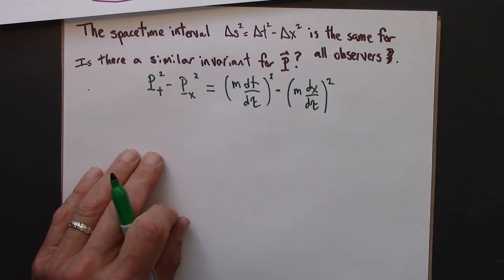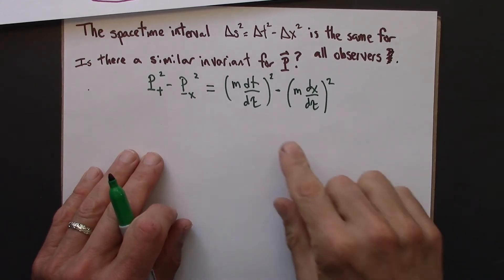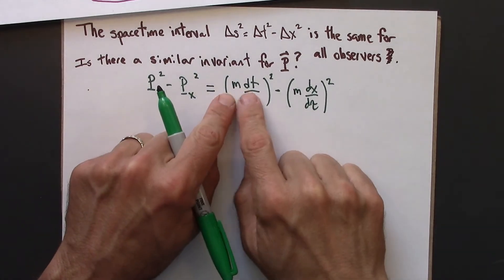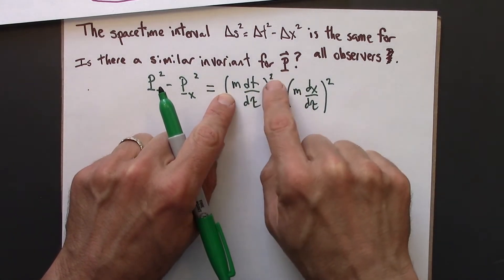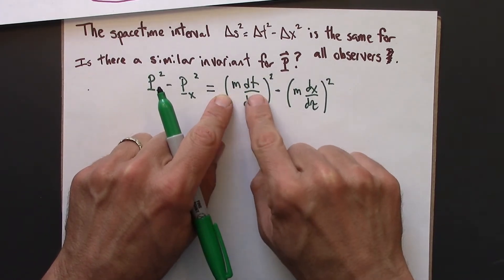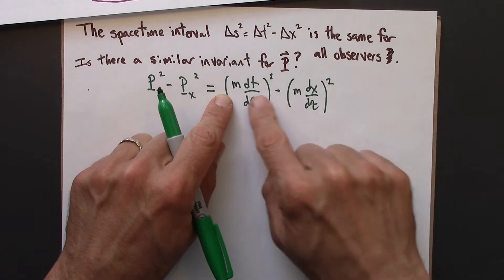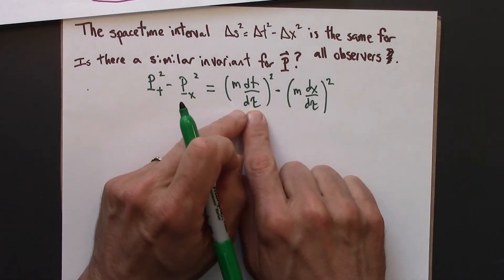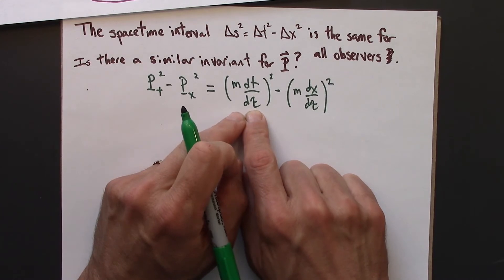So now let's do a little bit of algebra. There's going to be an m squared term. So when I square this out, I have to square the m, and I have to square the dt/dtau. I'm going to have an m squared minus m squared. So there's an m squared in both terms. And then there's going to be a dtau in both terms.